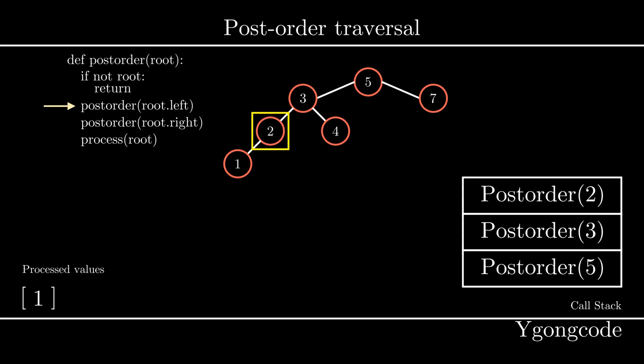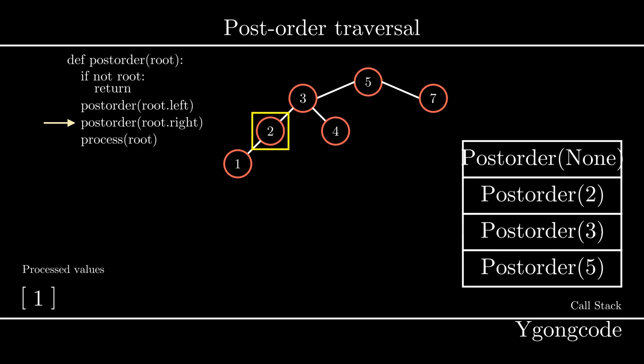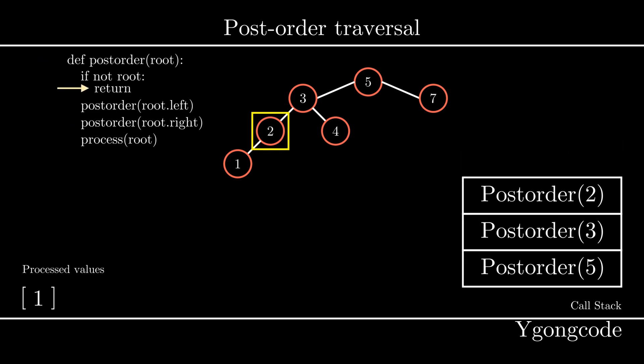At post-order(2), we exit out of the left subtree call and move on to its right subtree, which is empty. We push post-order(None) onto the call stack, hit the base case, pop it off, and go back to post-order(2). At post-order(2), we process the value, pop it off the stack, and move on to post-order(3).